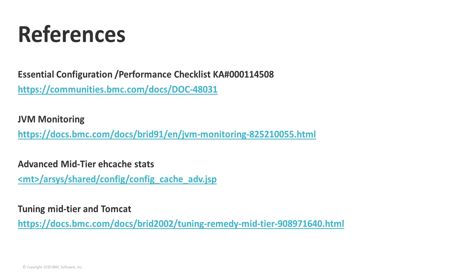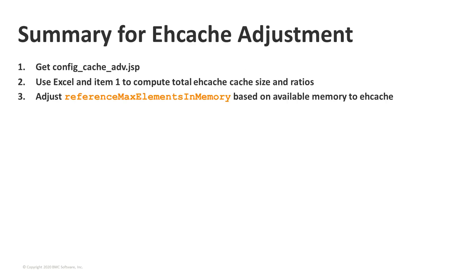Here are the references. For the essential KA, go to the link provided. For monitoring your JVM to get the spooling percentage, go to the JVM monitoring documentation. For advanced EH cache information, access the config_cache_adv.jsp page. To summarize: get your advanced cache information, copy and paste into Excel, massage the data, use the process we talked about — treat every single cache category the same across the board, adjust the base, and try to read as much from disk into memory as possible. Thank you for joining.